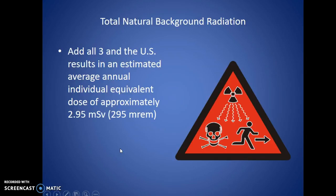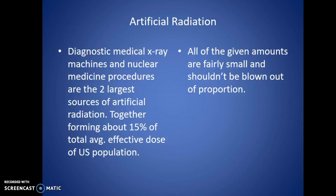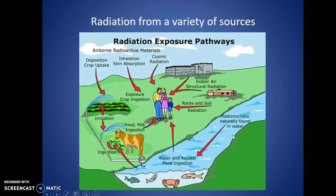All three background sources together total about 295 millirems per year or 2.95 millisieverts — not a ton, but it makes up the radiation that everybody pretty much gets. Man-made or artificial radiation is created by people for various things — air travel, nuclear fuel, fallout from weapons, medical radiation. The contribution is about 0.65 millisieverts to the average annual population — not very much, but it is going up in recent years with the development of CT. Diagnostic medical x-ray machines and nuclear medicine procedures are among the largest sources of artificial radiation, though CT ordering has increased significantly in the last 20 years.